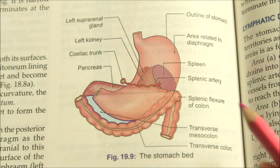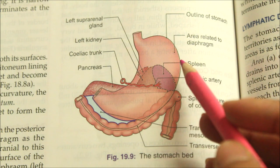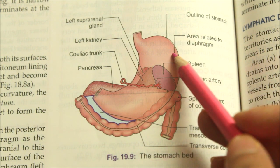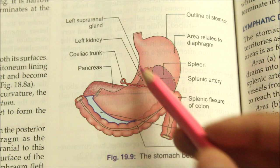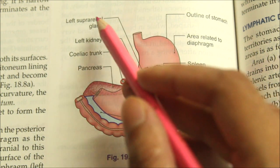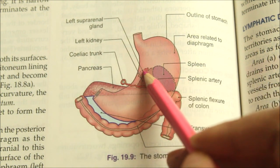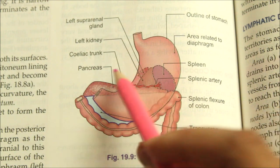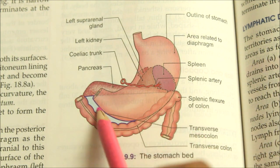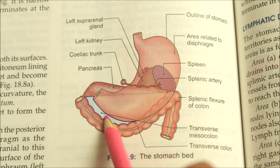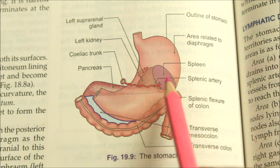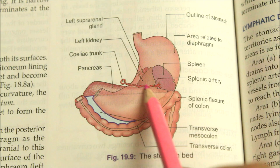The structures of the stomach bed are: the diaphragm, the left kidney, the left suprarenal gland, the pancreas, the transverse mesocolon, the splenic flexure of the colon, and the splenic artery.